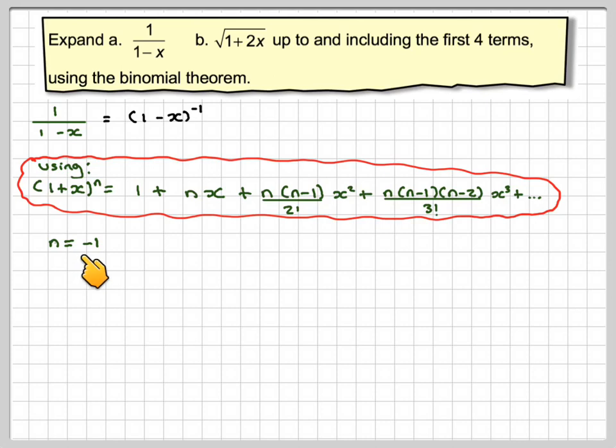Now if n equals minus 1, this is what we've got here, and in this case x will be equivalent to minus x. So instead of x we now need to substitute in minus x. We will get (1 - x)^(-1) equals 1 + (-1)(-x). So be careful, use the brackets.